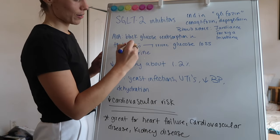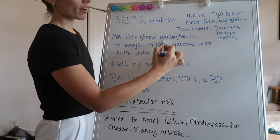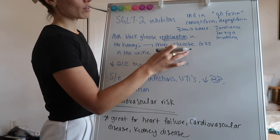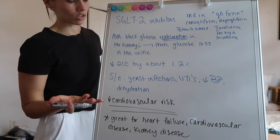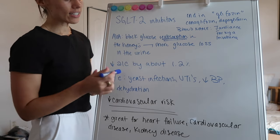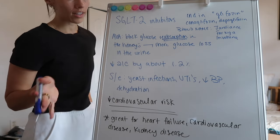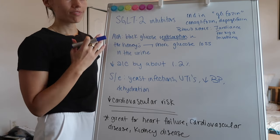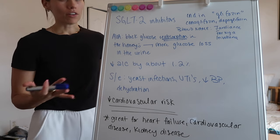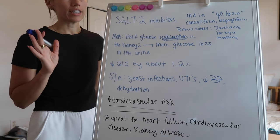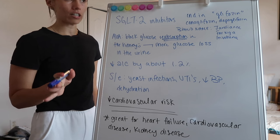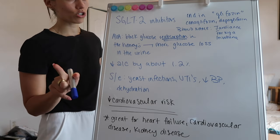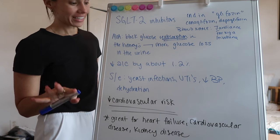The way that they work is they basically block glucose reabsorption in the kidneys. Whenever you're blocking reabsorption, that means that you are getting excretion — so you're having more glucose being lost in the urine, being excreted in the urine. They can decrease A1C by about 1.2%, which is amazing. A lot of times if you see these in diabetics, they are never the only medication. And if they are the only medication you see, I would hesitate to think that your patient is a diabetic — they might potentially have cardiovascular disease or renal disease and not be diabetic, but you should check because those are both highly linked to diabetes.